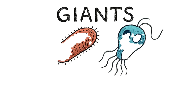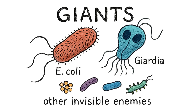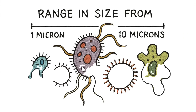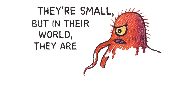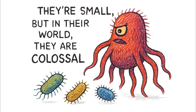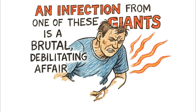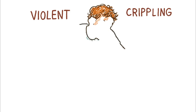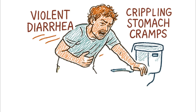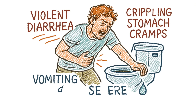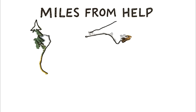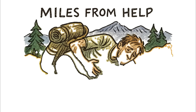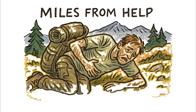We call them Giants not because they're large to us, but relative to the other invisible enemies. They range in size from 1 to 10 microns. To put that in perspective, a single human hair is about 70 microns wide. So they're small, but in their world, they are colossal. An infection from one of these Giants is a brutal, debilitating affair — violent diarrhea, crippling stomach cramps, vomiting, and severe dehydration. In a hospital, it's a miserable experience. In the backcountry, miles from help, that level of fluid loss is a death sentence.